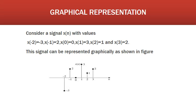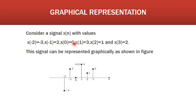The first type of representation is graphical representation, where the signal is represented in a diagram. For example, consider a signal x(n) with values: x(-2) = -3, x(-1) = 2, x(0) = 0, x(1) = 3, x(2) = 1, and x(3) = 2. For different values of n, x(n) is given, and we have to plot this signal in a graph showing the values of x(n) for different values of n.